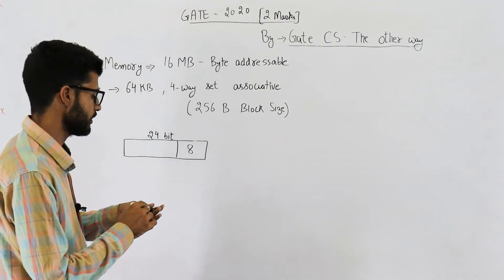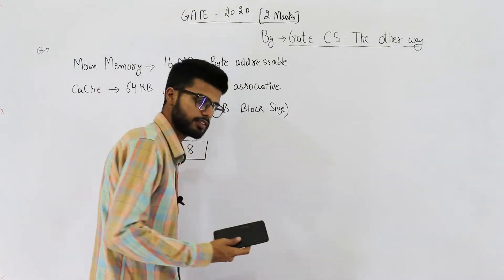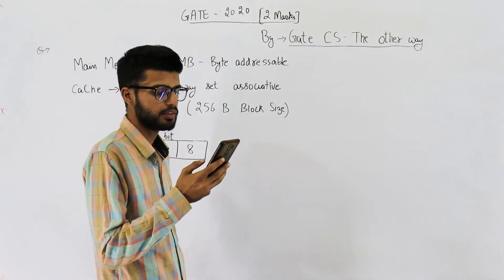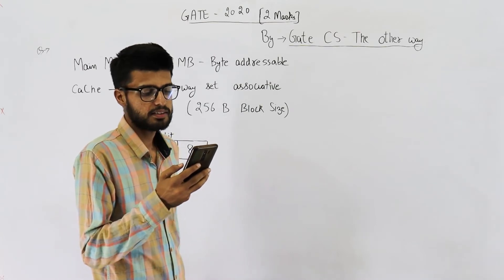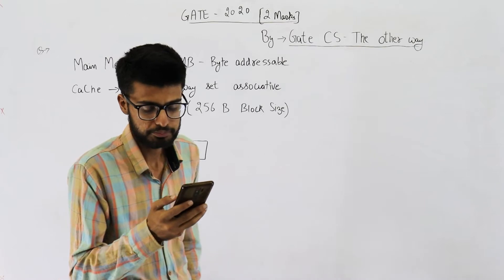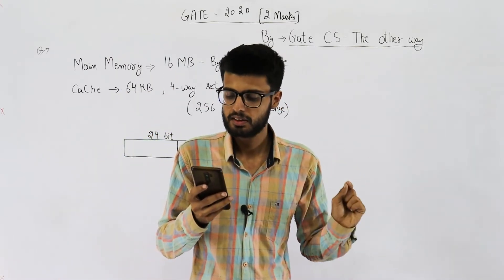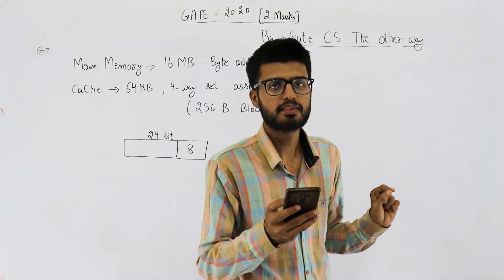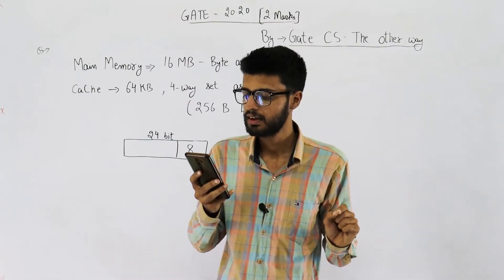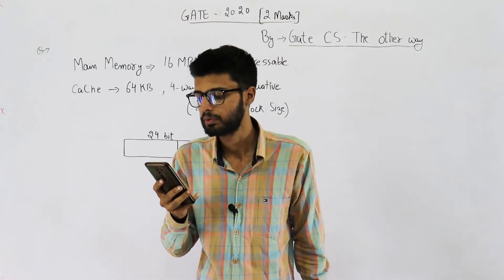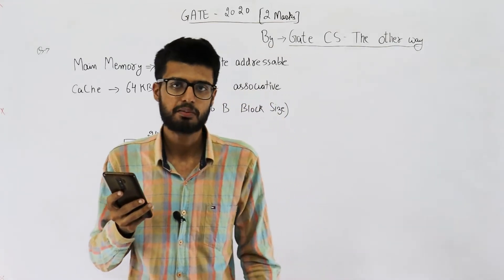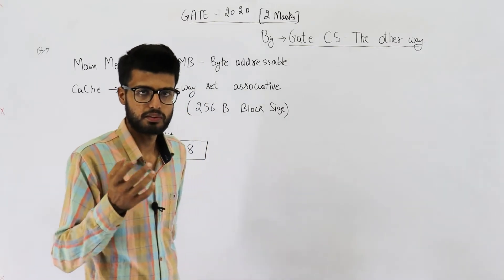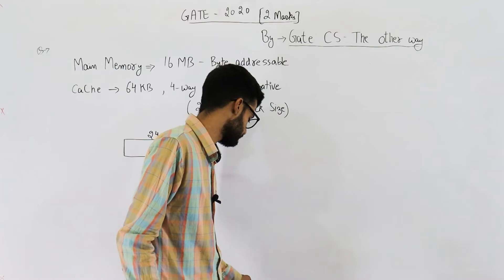The first line in the question was a bit confusing. It reads: a computer system with a word length of 32 bits has a 16 MB byte-addressable main memory. The 32-bit word length means 32 divided by 8 equals 4 bytes per word. But the second part says byte addressable, meaning one word equals one byte from the hardware perspective.